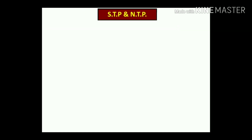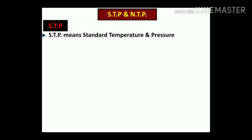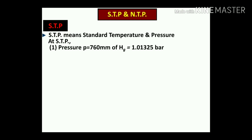STP means standard temperature and pressure. At STP, pressure P equals 760 mm of mercury, which is equal to the standard pressure of 1.01325 bar, and the temperature is 15 degrees centigrade, which converts to 288 degrees Kelvin.